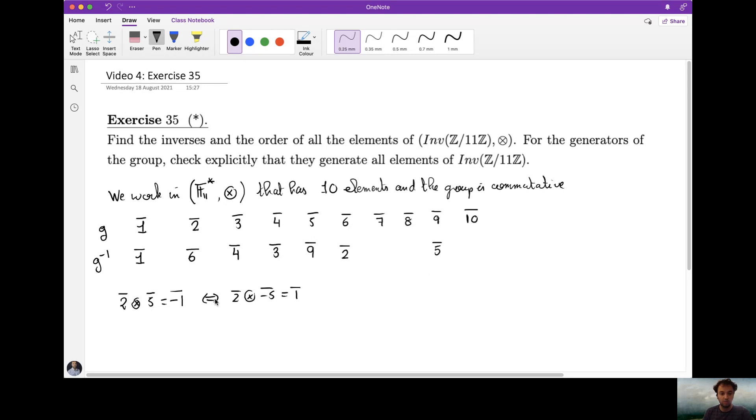10 is minus 1, so for example if you want to do 10, it corresponds to minus 1, minus 1 to the square is 1 so it is on inverse. And then we're just left with 7 and 8, and 7 times 8 is equal to 1 modulo 11, so here we have all the inverses.